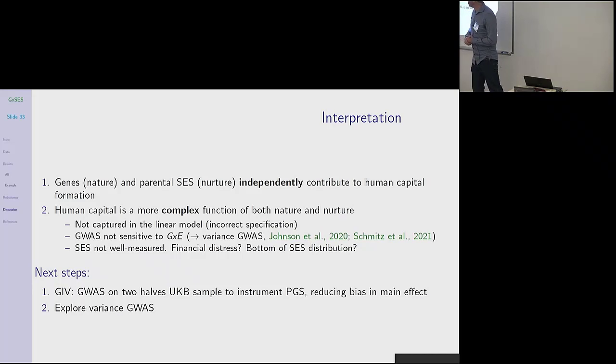The next steps that we're doing is GIV. So basically genetic instrumental variables methods. We conduct GWASs on basically two halves of the UKB sample. And then you can construct a polygenic score for half the sample and another one on one GWAS and the other half. And then you can instrument the two polygenic scores and this reduces bias in the main effect. But there's of course you reduce measurement error, so you get more power. But at the same time, we're now looking at GWASs that are based on the UKB. So we have smaller GWASs. And the last thing is that we can maybe explore variance GWASs or do something else. That's it. Thank you.